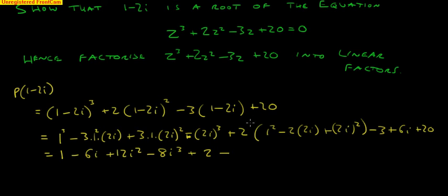Plus 2 times that gives me 2 minus, 2 times 2 is 4 and 4 times 2 is 8i. 2 squared is 4, 2 squared is 4 and 4 times 2 is 8 and that's i squared. Now we've got minus 3 plus 6i, minus 3 that is plus 20.